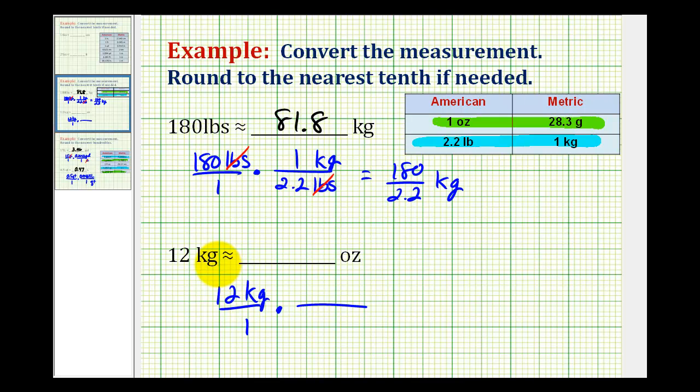So one thing we have to remember about the metric measurement system is that it's base 10, which makes conversions much more convenient. Kilo means 1,000, so there's 1,000 grams in a kilogram, and we can use that information to do the conversion from kilograms to grams, and then use the provided conversion.